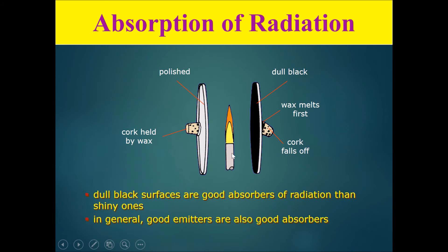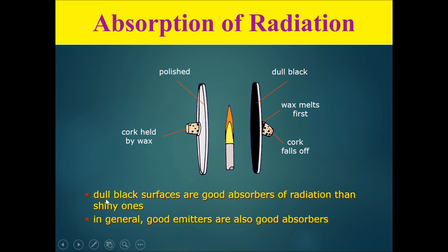It is a common exam question: they show you a Bunsen burner with a plate painted white and polished (shiny) on one side and a plate painted black and dull (rough surface) on the other. A cork is held by solidified wax on each plate, placed equidistant from the Bunsen burner, and you're asked which cork falls off first. The correct answer is the cork on the dull black plate, because dull black surfaces are much better absorbers of radiation than shiny white plates.